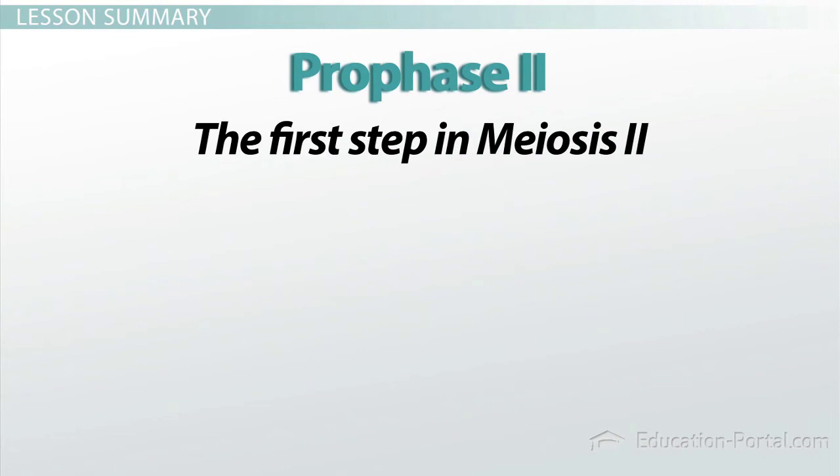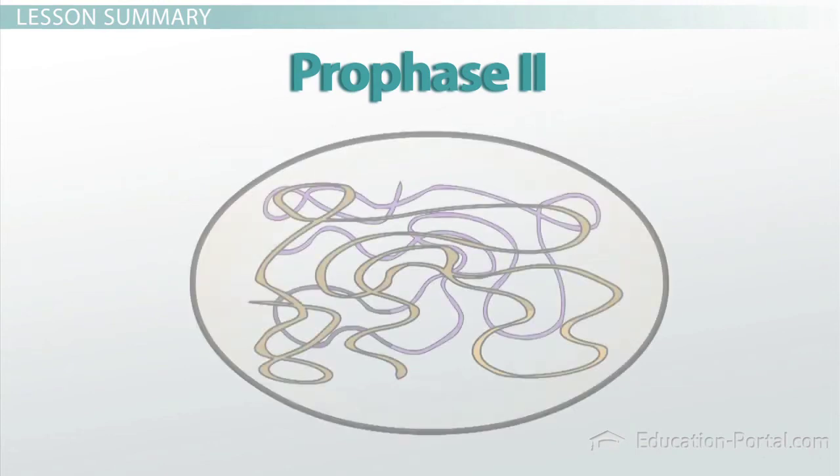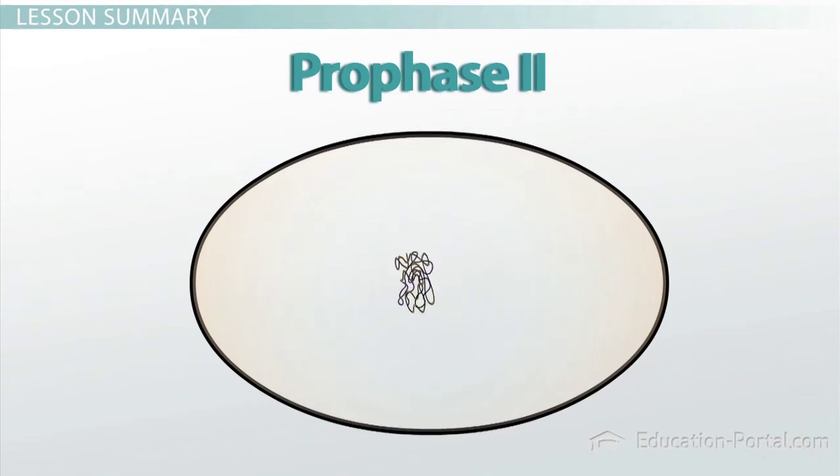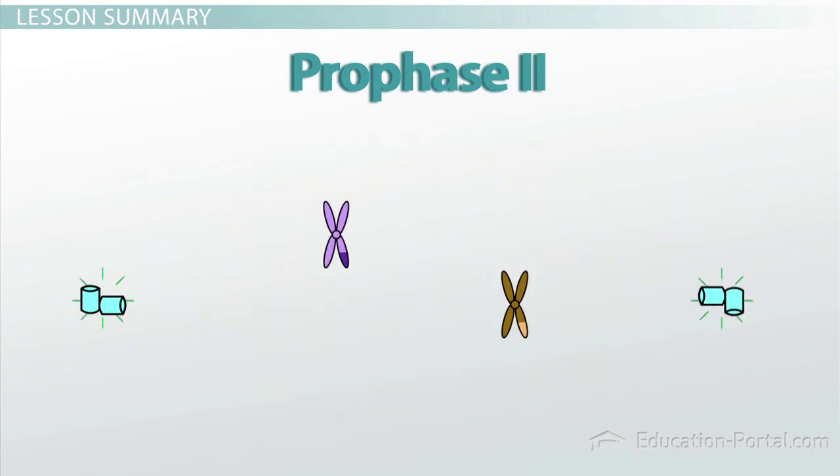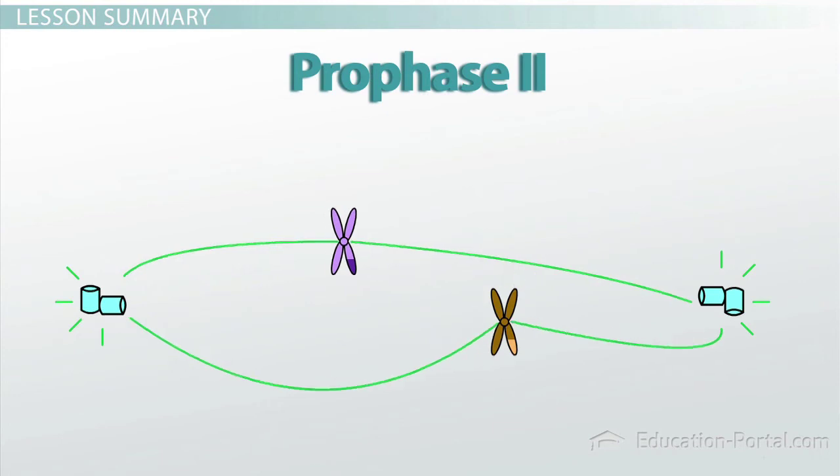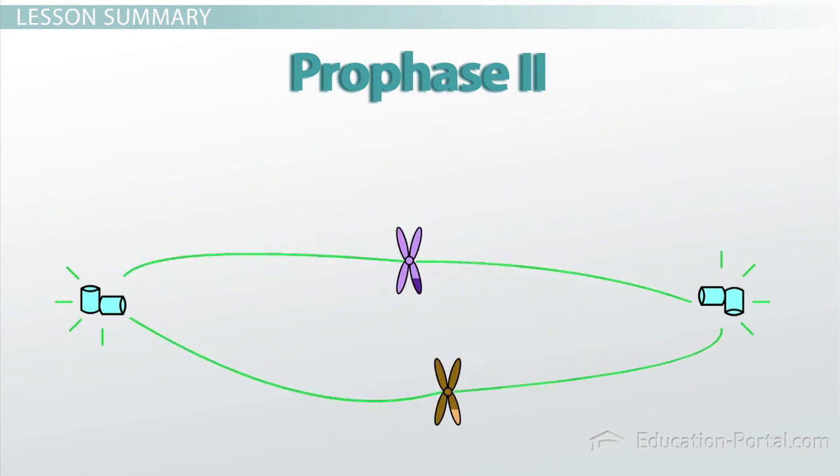Prophase II is the first step in meiosis II. Like mitosis and meiosis I, chromatin condenses, centrosomes move to opposite poles, and a spindle apparatus forms. Kinetochores assembled at the centromeres work with spindle microtubules to guide the chromosomes to the metaphase plate.